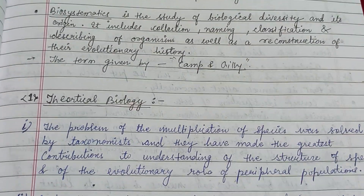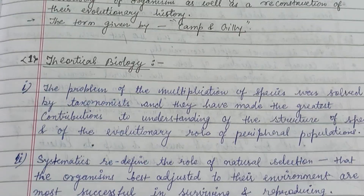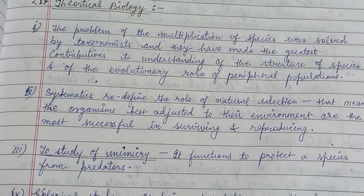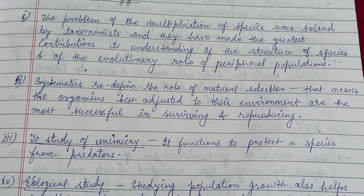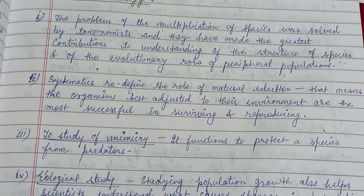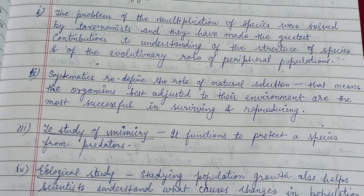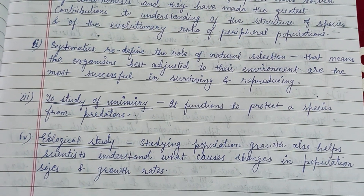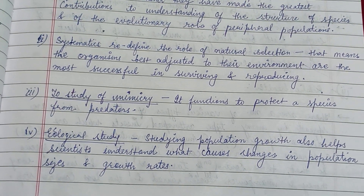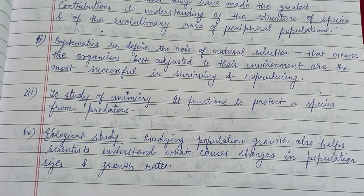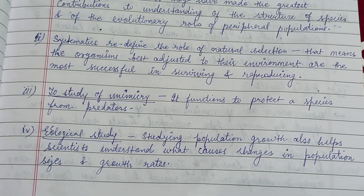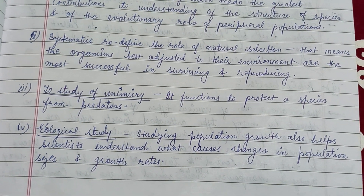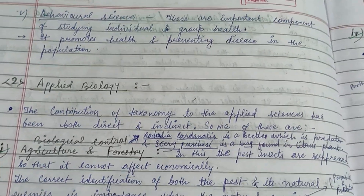Systematics may be described in two types: theoretical biology and applied biology. According to theoretical biology, the problem of the multiplication of species was solved by taxonomists, who made the greatest contribution to understanding the structure and species and the evolutionary role of peripheral populations, to study mimicry of populations from predators, ecological studies, and behavioral science.